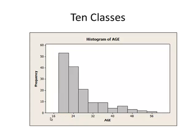Let's look if we change the number of classes. Now this histogram has 10 classes, and we can count the bins: 1, 2, 3, 4, 5, 6, 7, 8, 9, 10. We have 10 classes here.